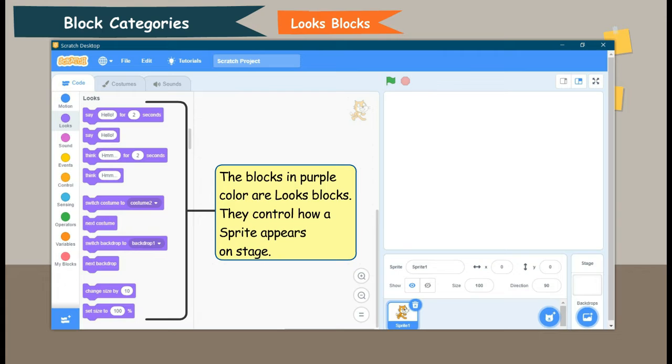Looks block. The blocks in purple color are looks blocks. They control how a sprite appears on stage.